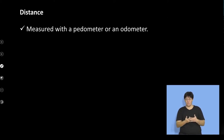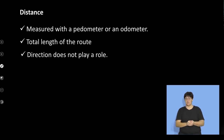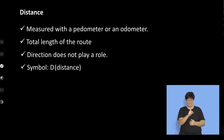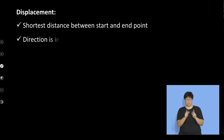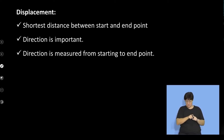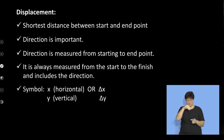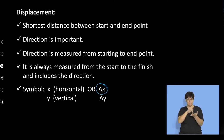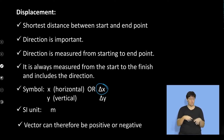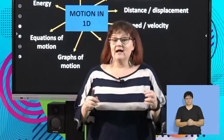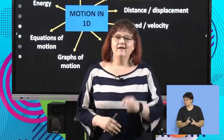To summarize: distance is measured with a pedometer or odometer — the total length traveled, direction doesn't matter, symbol is d, unit is meters, and it's a scalar. Displacement is the shortest distance between start and end — direction is important, always measured from starting point, symbol is x for horizontal or y for vertical, unit is meters, and it's a vector so it can be positive or negative. That's all for now — take a short break and I'll see you in a couple of minutes.